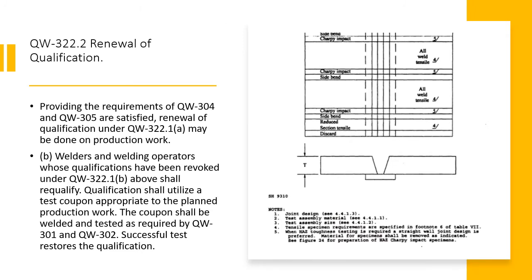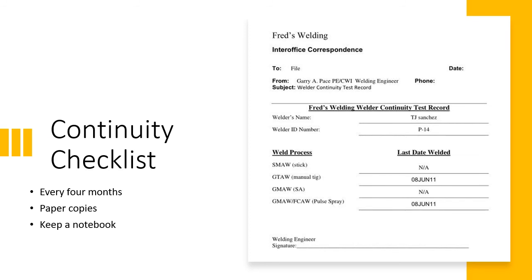Renewal of qualifications under QW-322.2 may also be done on production work, providing requirements of QW-304 and QW-305 are satisfied. Welders and welding operators whose qualifications have been revoked under QW-322.1(b) shall requalify using a test coupon appropriate to the planned production work, welded and tested as required by QW-301 and QW-302. A successful test restores their qualifications.